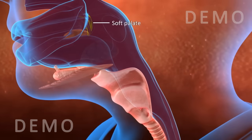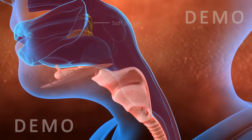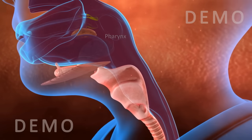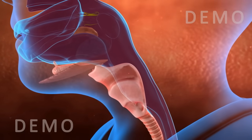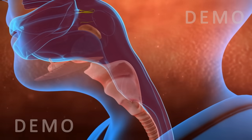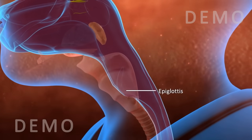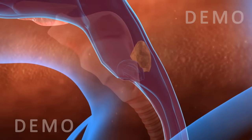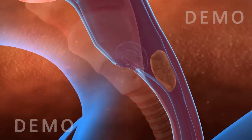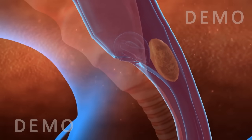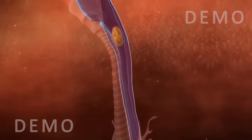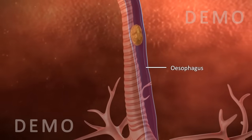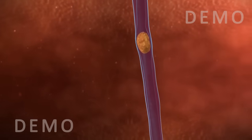As the food is swallowed, the soft palate blocks the upper throat called the pharynx, which prevents the entry of food into the nasal cavity. When the food passes over the epiglottis — a flap-like structure which prevents the entry of food into the trachea — it pushes down the epiglottis. The food then enters the food pipe, or esophagus, which connects the pharynx to the stomach.